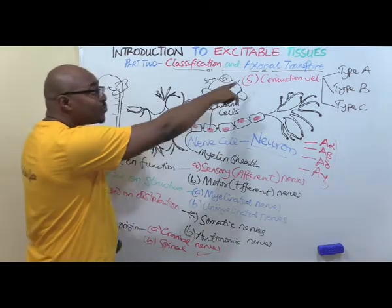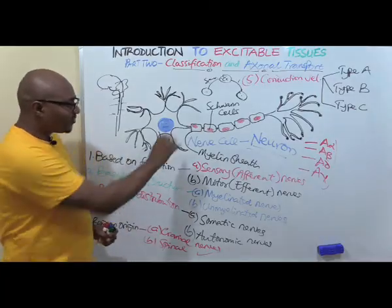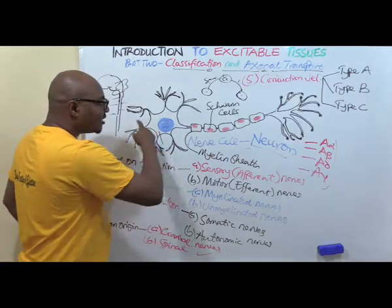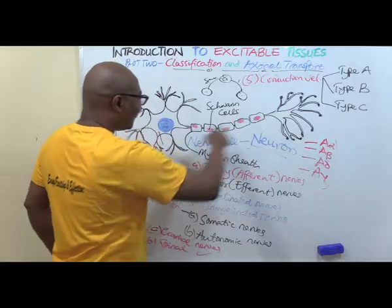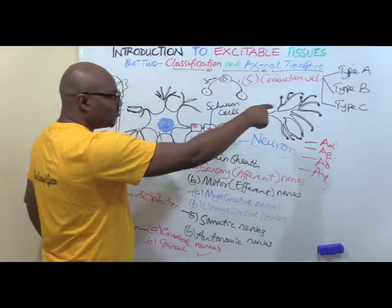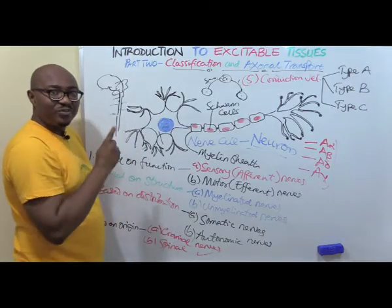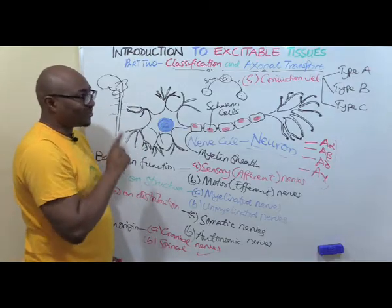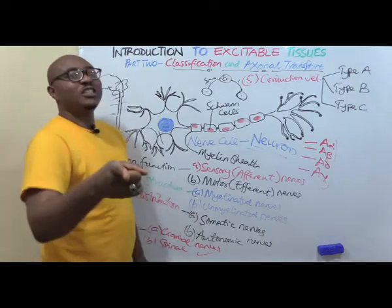After the break, we are going to be dealing with axonal transport. This is the axon. Substances, a lot of substances, move to and fro from this cell body - move away from the cell body, move towards the cell body. Something very important you need to learn about axonal transport. I'm going to be talking about that after this break.